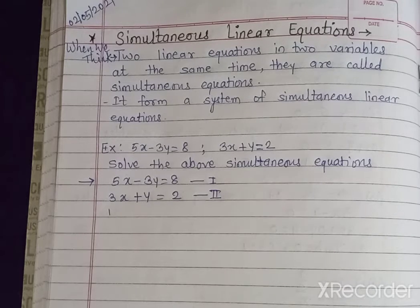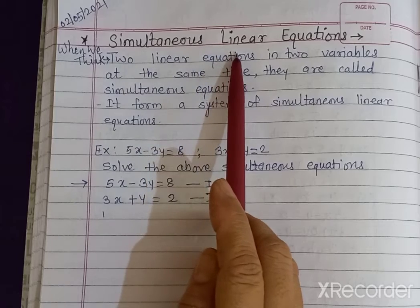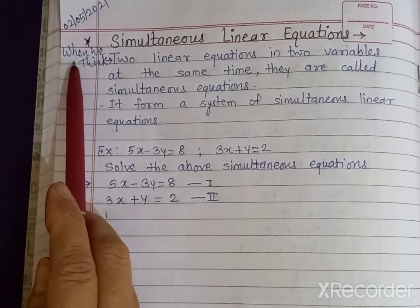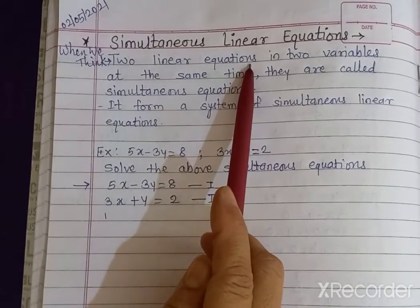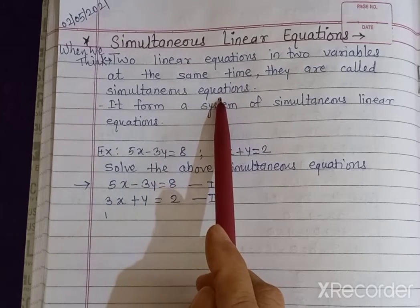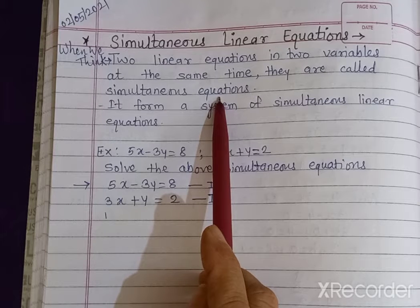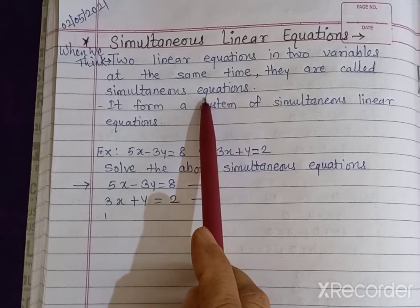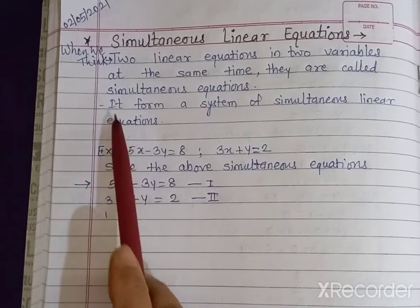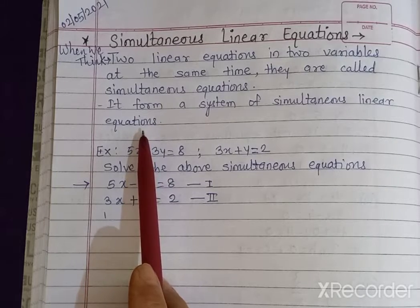Hello friends. This is the second video of the first chapter. In this we are going to study simultaneous linear equations. Simultaneous linear equations are when we consider two linear equations in two variables at the same time — they are called simultaneous equations. If we take two or more linear equations, it forms a system of simultaneous linear equations.